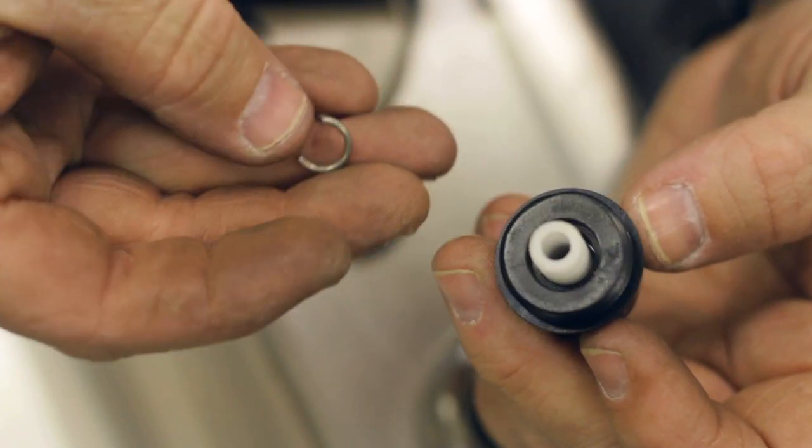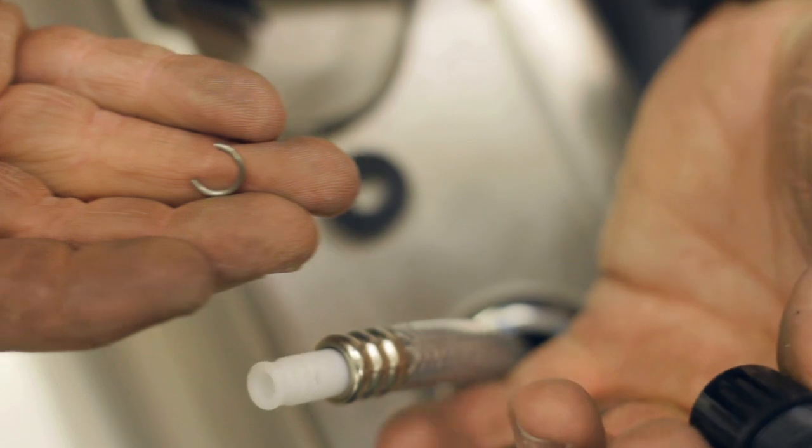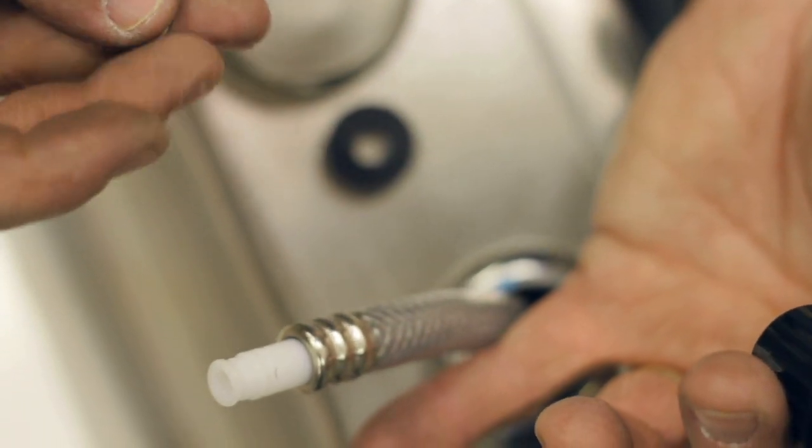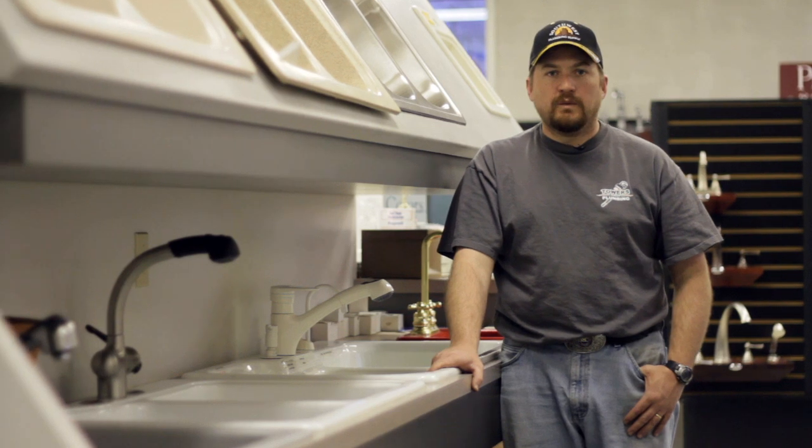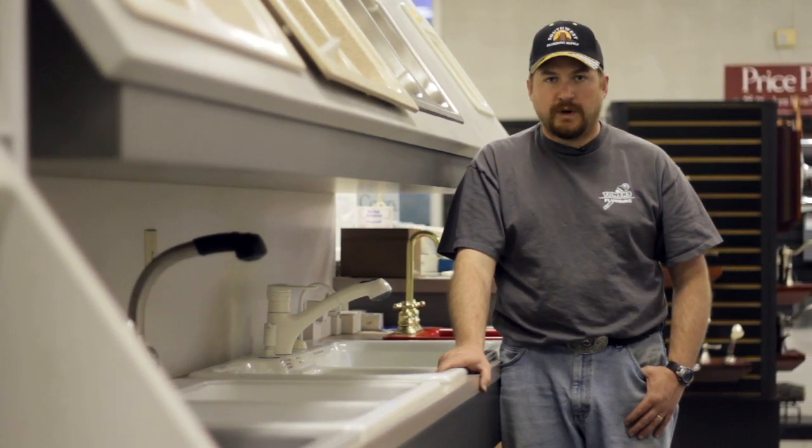Now there's that little clip and the nut pulls right off and then you can just simply reinstall that. And again I'm Terry with Towers Murray Plumbing. We've showed you how to fix a kitchen faucet sprayer.